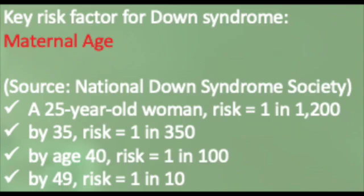Typically, if a 25-year-old woman conceives, the risk of getting Down Syndrome is only 1 in 1200. But when the age goes up — if conceived at age 35 — the risk increases to 1 in 350. If the age increases to 40 and above, the risk becomes 1 in 100. The most serious case is if the age is above 49 years old, where the chance of having a Down Syndrome baby increases to 1 in 10.